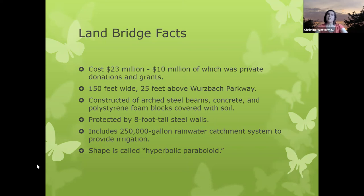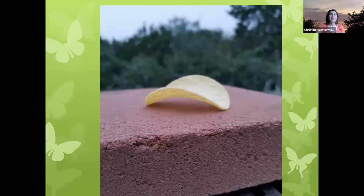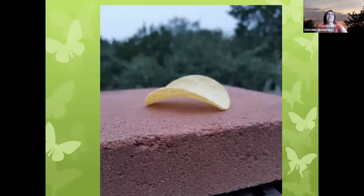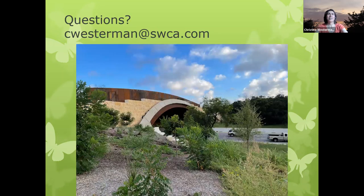I heard a presentation by one of the landscape architects who worked on this bridge, and he said it's basically shaped like a Pringle potato chip — a shape called a hyperbolic paraboloid. The bridge arches from one side to the other, and also arches up and down along its width. This shape creates those walls on the side that help make you feel more like you're still in nature, even though you're on a bridge. And here you can get a view of those steel arches that are holding up the bottom of it.